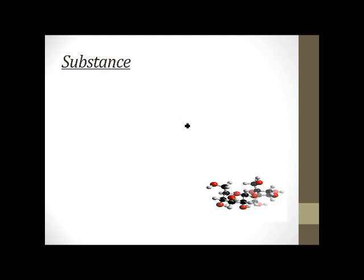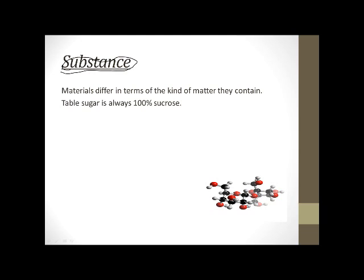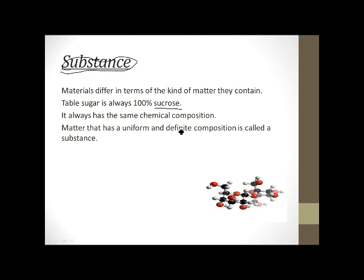Another key term we're going to talk about is a substance. And substance is a word that you're going to have to know. The regents can possibly ask you which of the following things are a substance. So you're going to have to be able to answer it. So in general, materials differ in terms of the kind of matter they contain. Certain things, though, is always going to be the same, like table sugar is 100% sucrose, making table sugar a substance, because it's always the same. The chemical composition is always the same. So matter that has a uniform and definite composition is called a substance, meaning it's the same throughout.